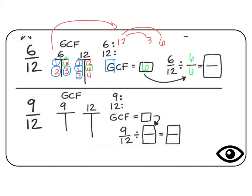Now we can divide. 6 divided by 6 is 1. 12 divided by 6 is 2. So the simplified version of this number would be 1 half.